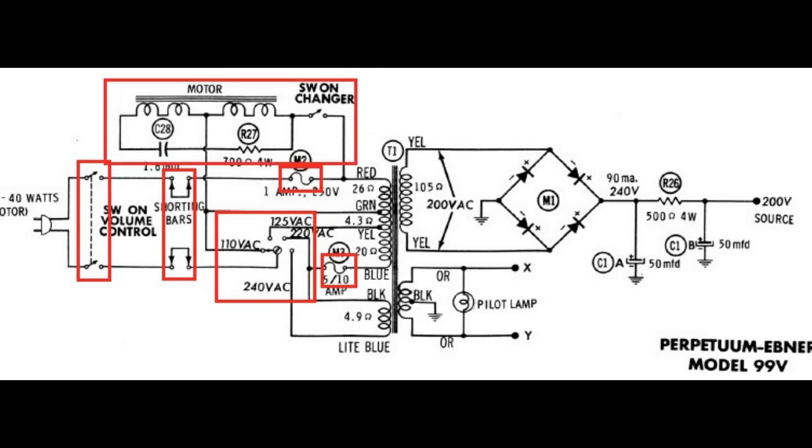Before we get to the transformer some of the voltage is bled off to the turntable section to run the very quiet and smooth four inductor motor. The transformer is next and it has two output windings, a 200 volt high voltage for the B voltages and a 6.3 volt center tap for the pilot lamp and valve heaters.